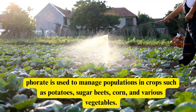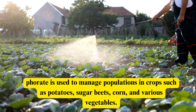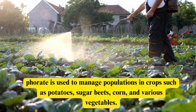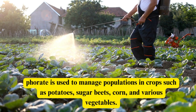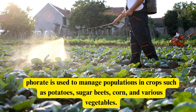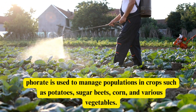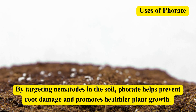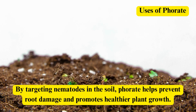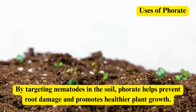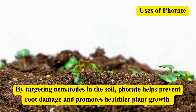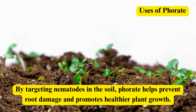In nematode control, 4-8 is used to manage populations in crops such as potatoes, sugar beets, corn, and various vegetables. By targeting nematodes in the soil, 4-8 helps prevent root damage and promotes healthier plant growth.